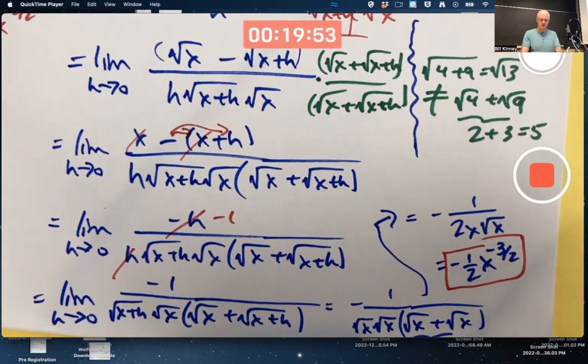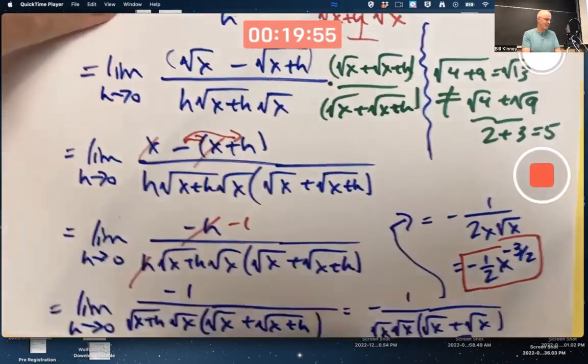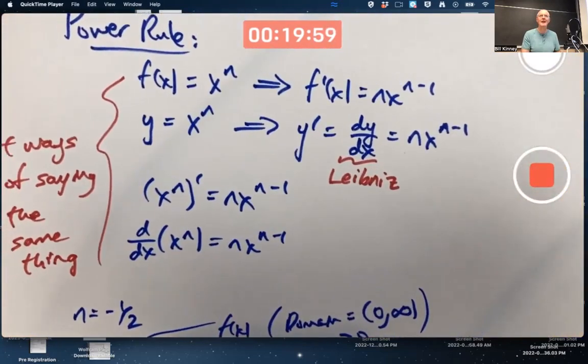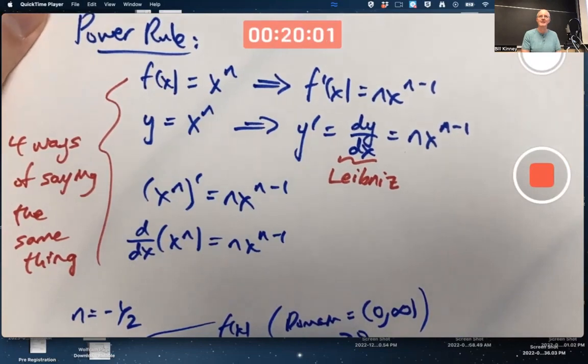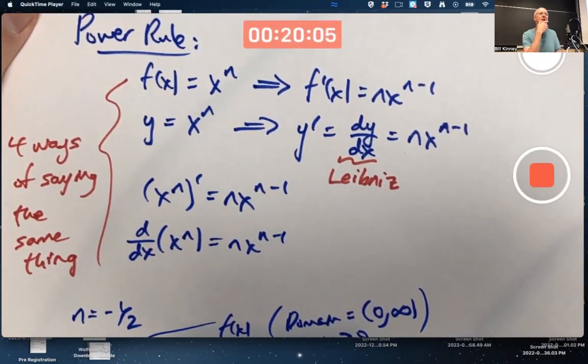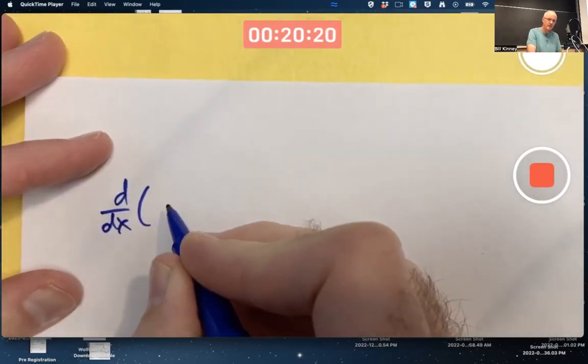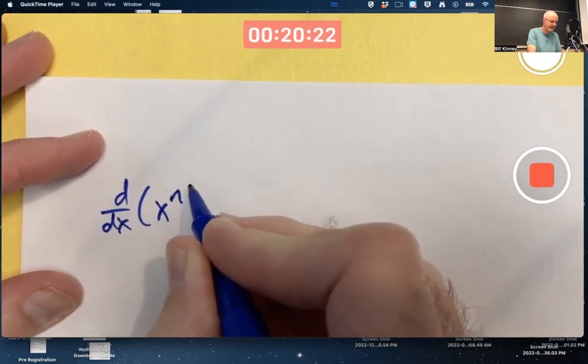Are we going to prove the general power rule? Not in its most general form. Not when n is an arbitrary number. You're disappointed, huh? We can sort of prove it when n is a positive integer, though. Let's do that.